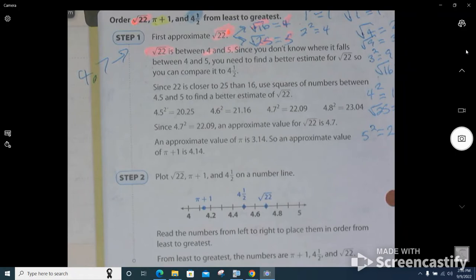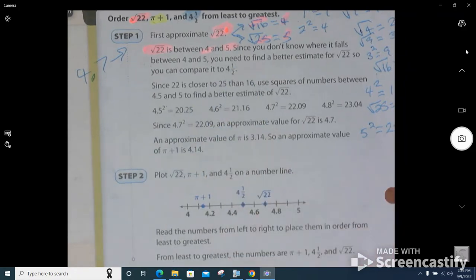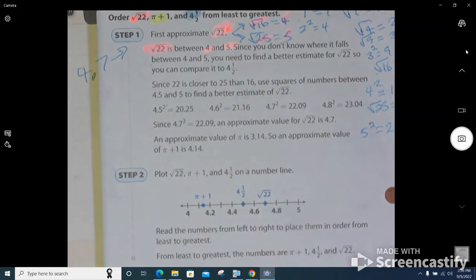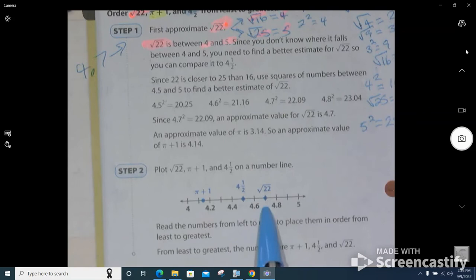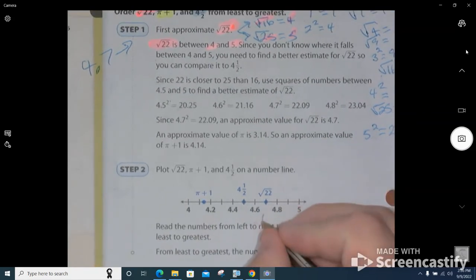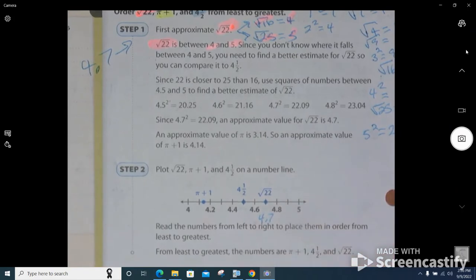Cool. Well, that's bigger than 4.5. What is 4.5? Yeah, 4.5, right? So we know that it's about 4.7, and look where they graph it. Right at about 4.7. Okay.